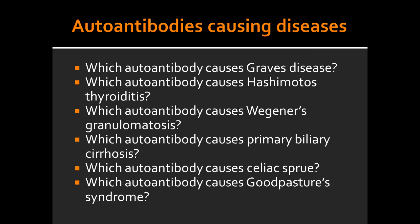Which autoantibody causes Hashimoto's thyroiditis? Hashimoto's thyroiditis is caused by anti-microsomal antibody. Which autoantibody causes Wegener's granulomatosis? Wegener's granulomatosis is caused by antineutrophil cytoplasm, ANCA autoantibody.